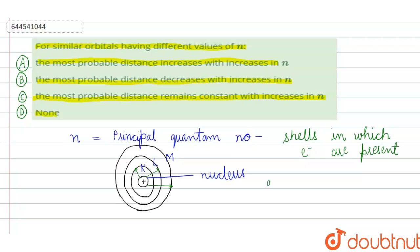So here the distance increases, and our principal quantum number also increases. Distance increases where n also increases.